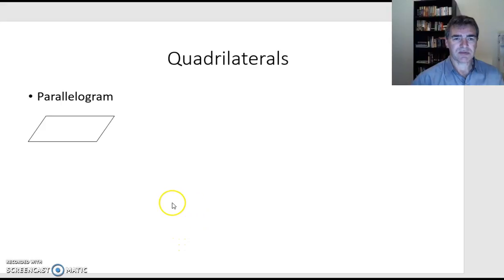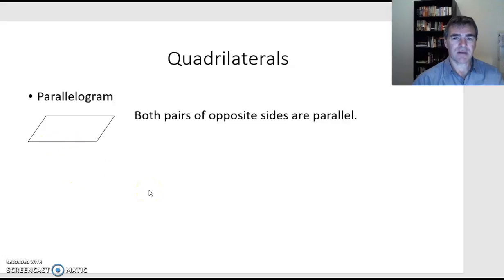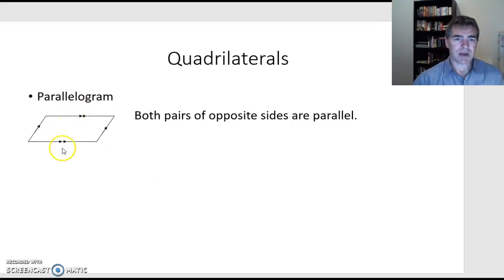A special trapezium is what we call a parallelogram. It has at least one pair of parallel sides — in fact, it has two pairs of parallel sides. Both pairs of opposite sides are parallel, indicated with arrows using different numbers so we know which sides match. The opposite sides are not only parallel, but equal in length. So these two sides are equal and these two sides are equal.